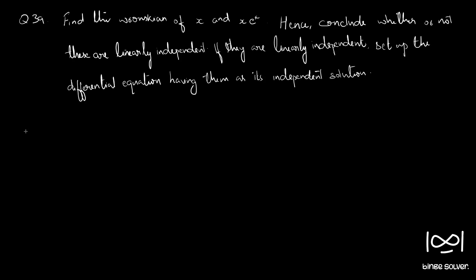Question 39. Find the Wronskian of x and xe^x. Hence, conclude whether or not these are linearly independent. If they are linearly independent, set up the differential equation having them as its independent solutions.